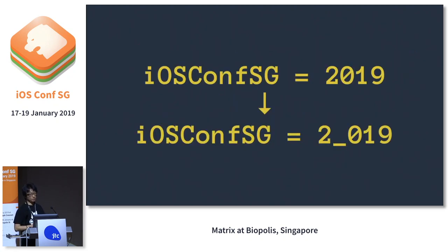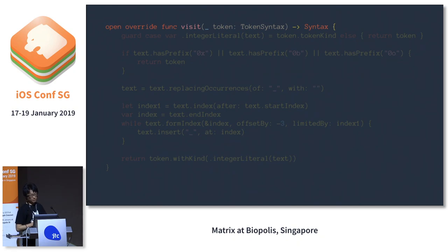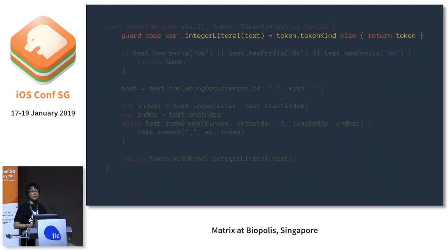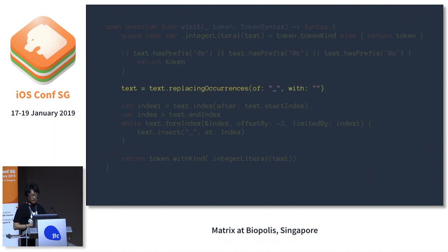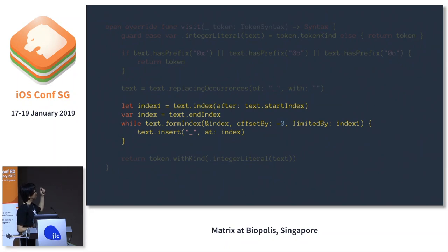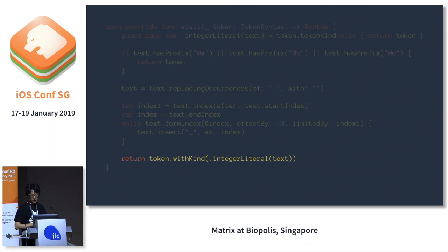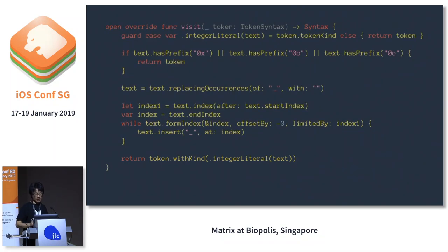Next, let's try adding underscores to a decimal number for readability. To implement that, we visit TokenSyntax at the bottom-most leaf node. We validate its token kind — whether it's actually an integer — and check whether the text is a decimal number. We're not interested in hexadecimal or binary numbers, so we ignore those. If validation succeeds, we remove existing underscores first, then go from end index backward to start index, offset by negative three each time, and insert underscores at the right position. Finally we update the original node with the new result. Very easy.